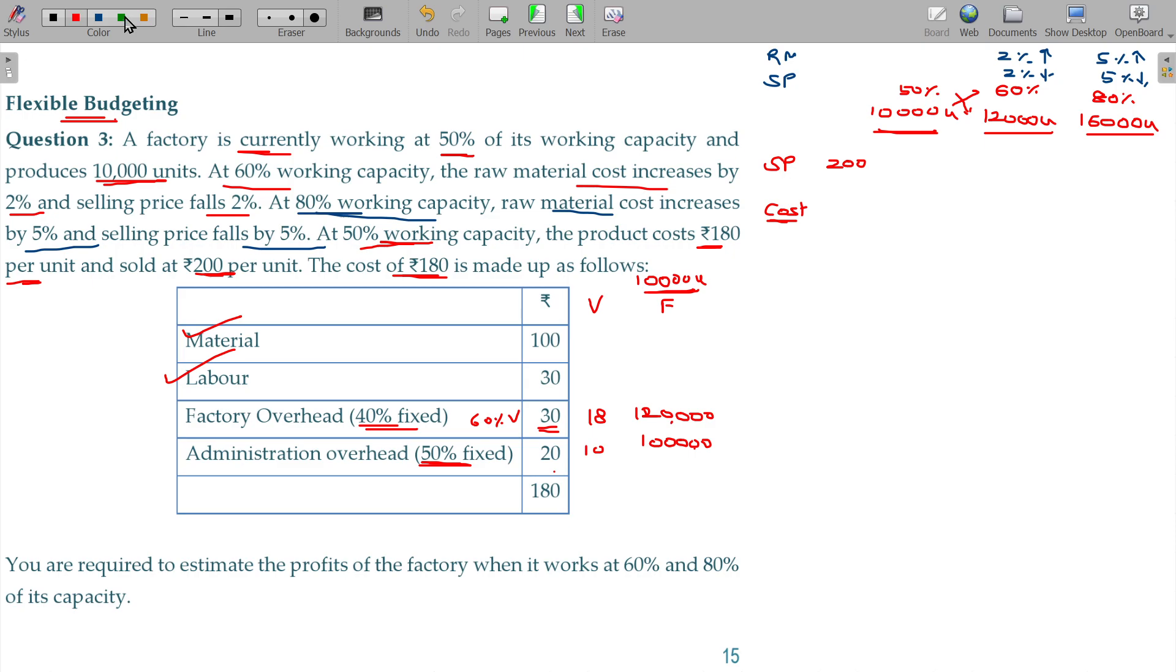Now in the cost, variable cost under that: material, labour, and factory overhead, administration overhead. 100 rupees, 30 rupees, 18 rupees, 10 rupees. Total being 158.